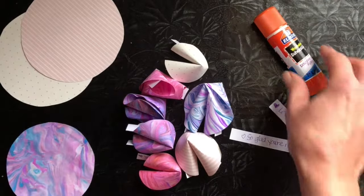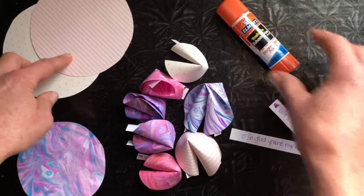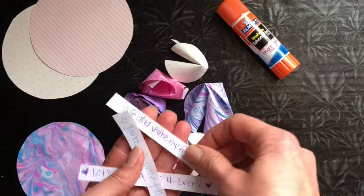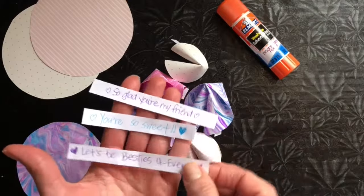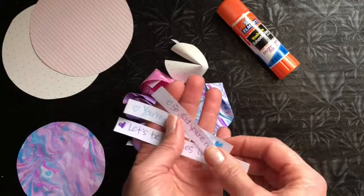You'll need glue. A glue stick will work for regular paper and for the heavier weight paper we'll use a glue gun. And you will need some strips of paper which your kids can write their messages on and these will be the little valentine's fortunes that go inside of the paper fortune cookies.